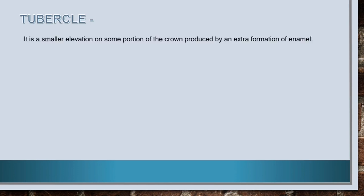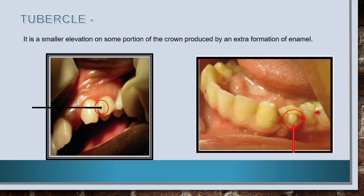Now let's have a look at tubercle. A tubercle is a smaller elevation on some portion of the crown produced by an extra formation of enamel. These are deviations from the typical form.